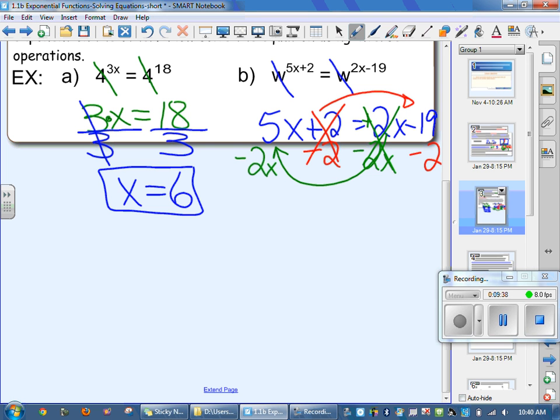So when I add them, they're called like terms. If they're like terms, you only add the digits in front. So I've got a 5 and a negative 2. 5 and negative 2 give me a 3. So I've got 3x's equal. Negative 19 plus a negative 2 gives me a negative 21.